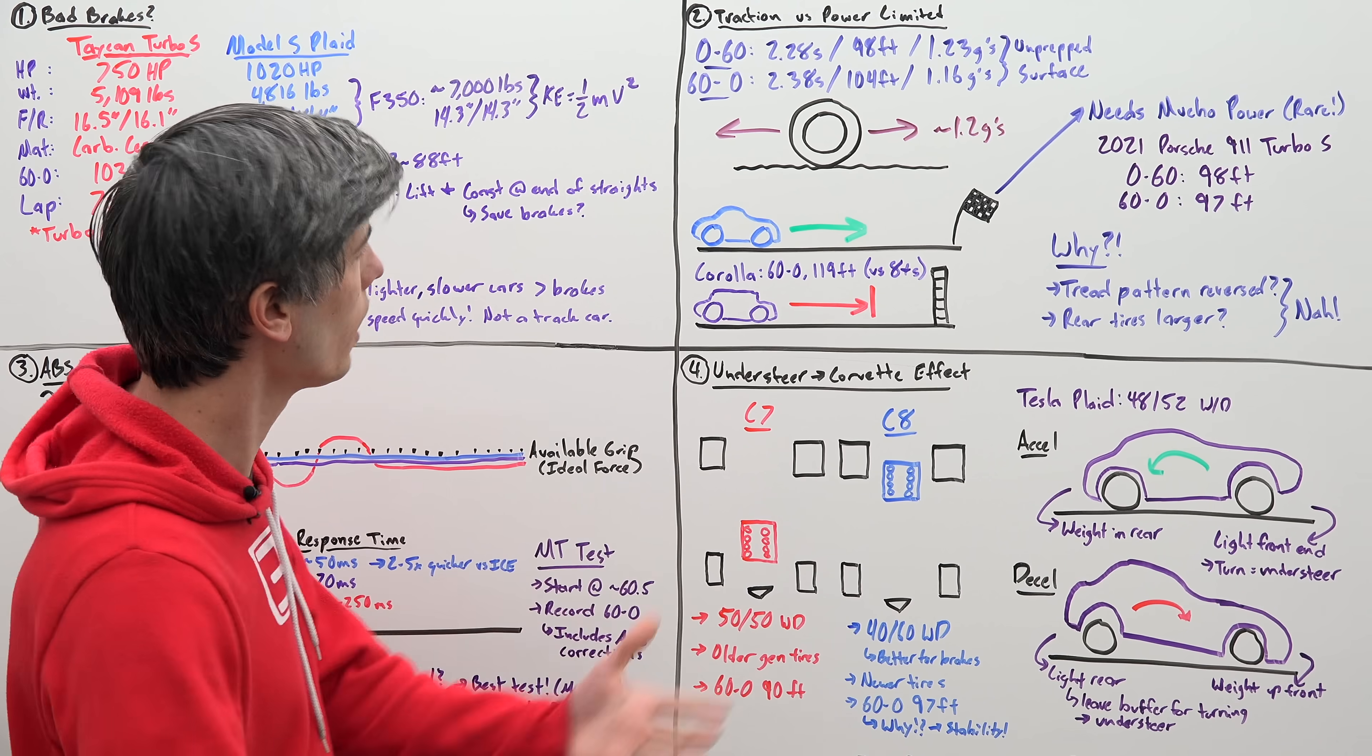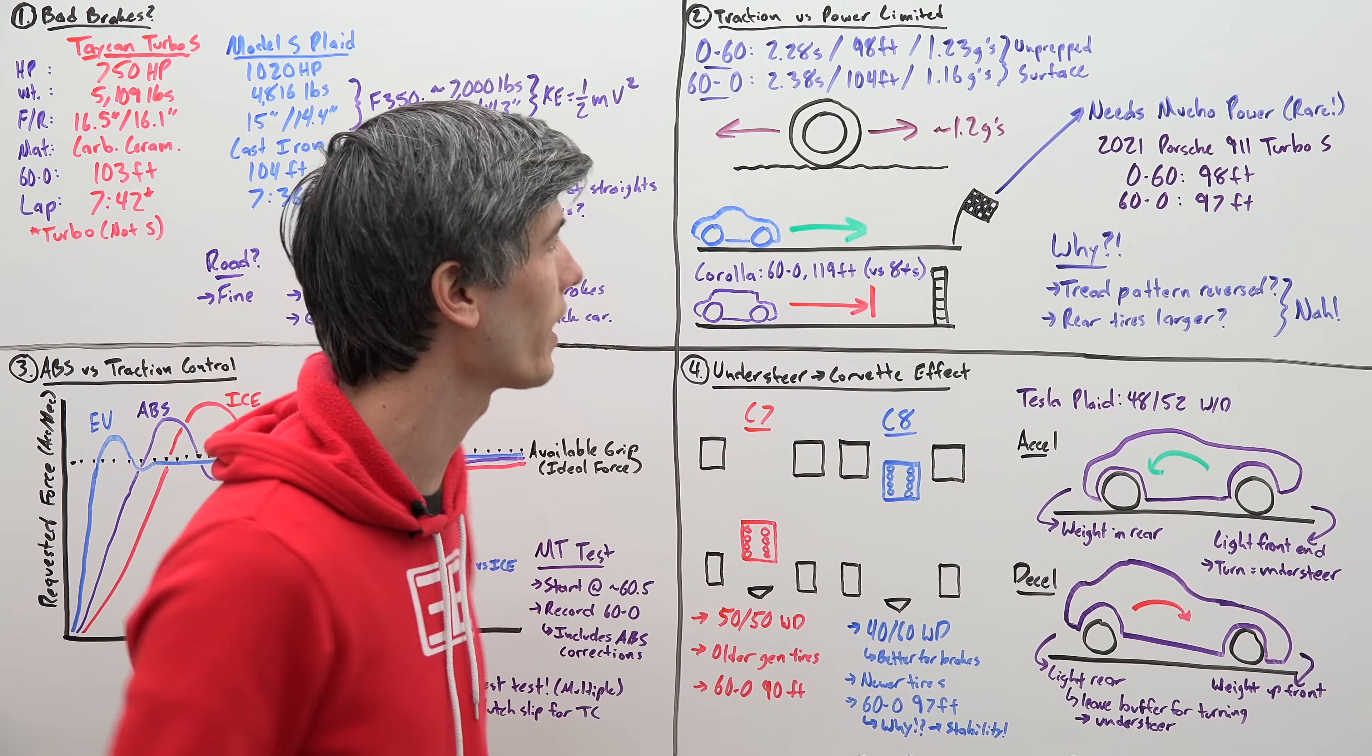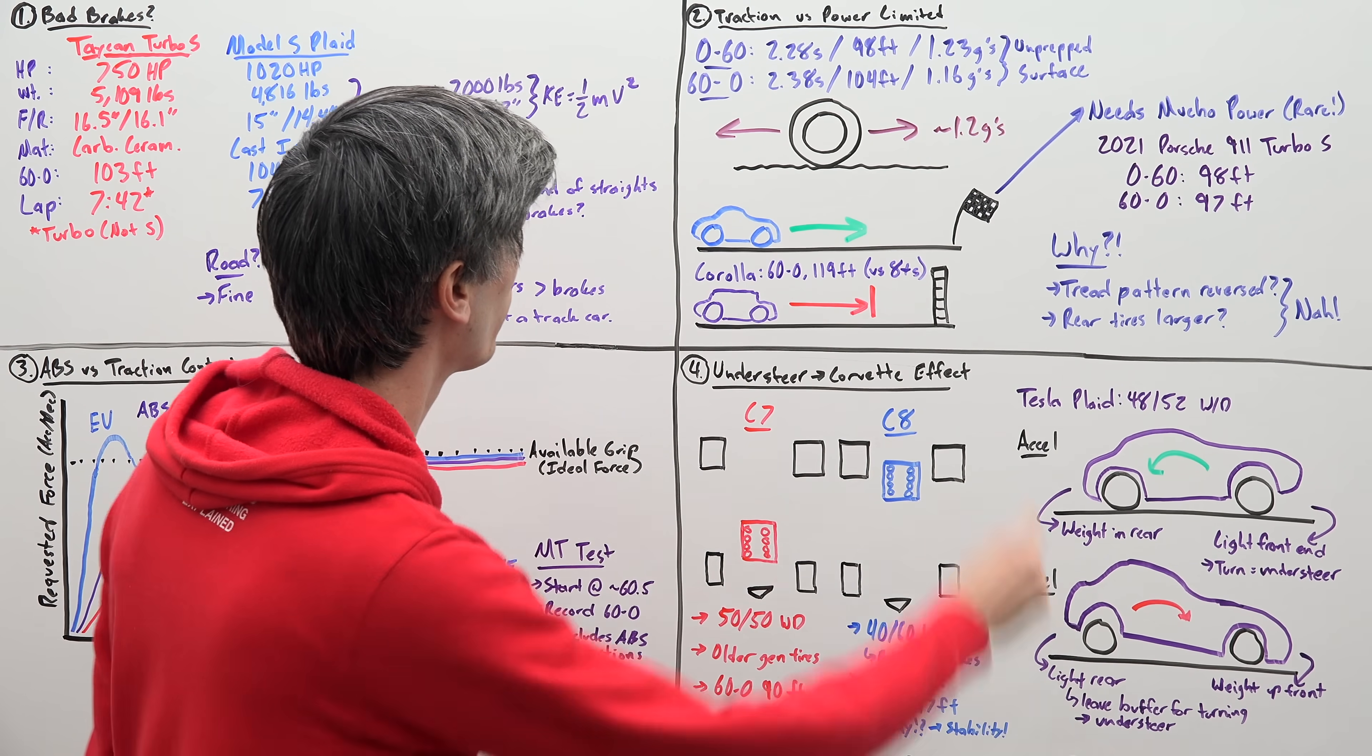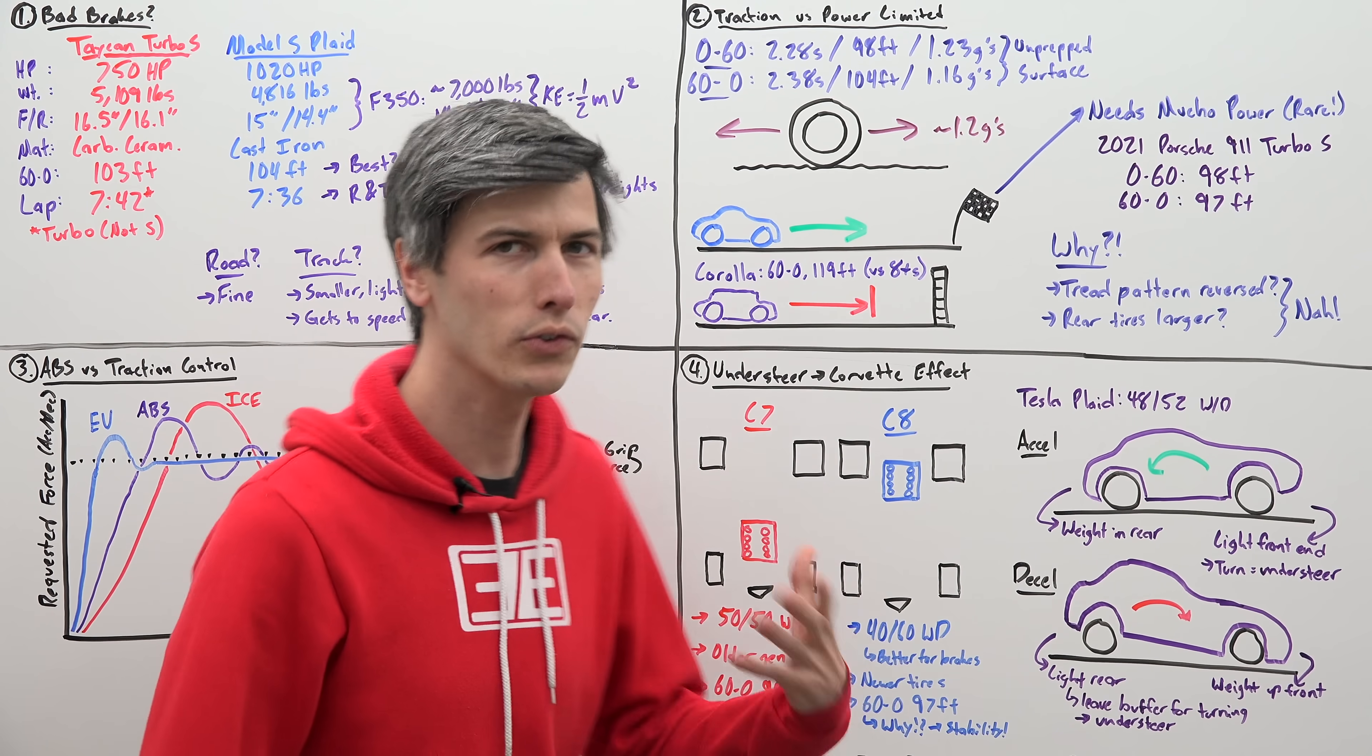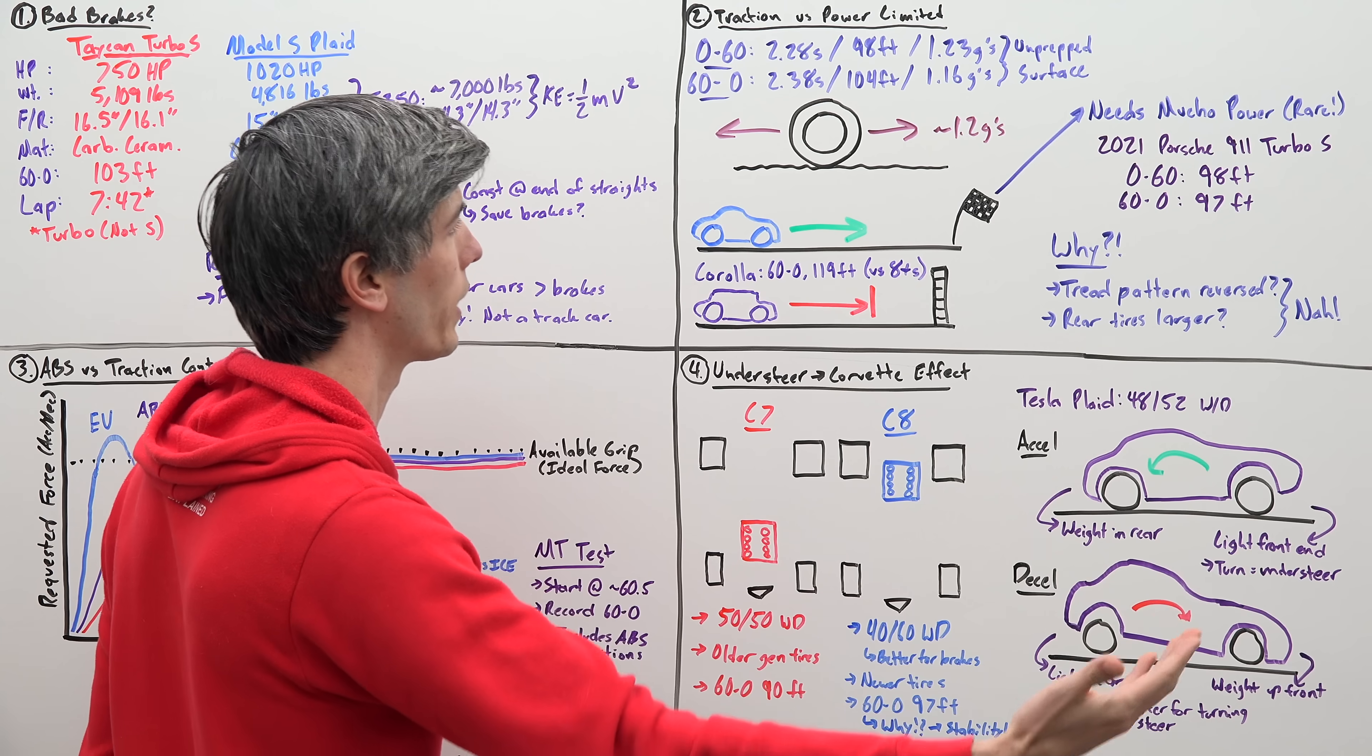Now that leads us to our second and much more complicated question. How in the world does this thing accelerate better than it brakes? The numbers are 0 to 60 on an unprepared surface in 2.28 seconds requiring 98 feet to do it versus stopping from 60 to zero takes 104 feet, an additional six feet there, 2.38 seconds to stop. So the thing here we need to think about is traction versus power limited. Most cars are traction limited when braking, power limited when accelerating. This Tesla is in a very rare spot where it is traction limited in both scenarios whether it's accelerating or whether it's braking.